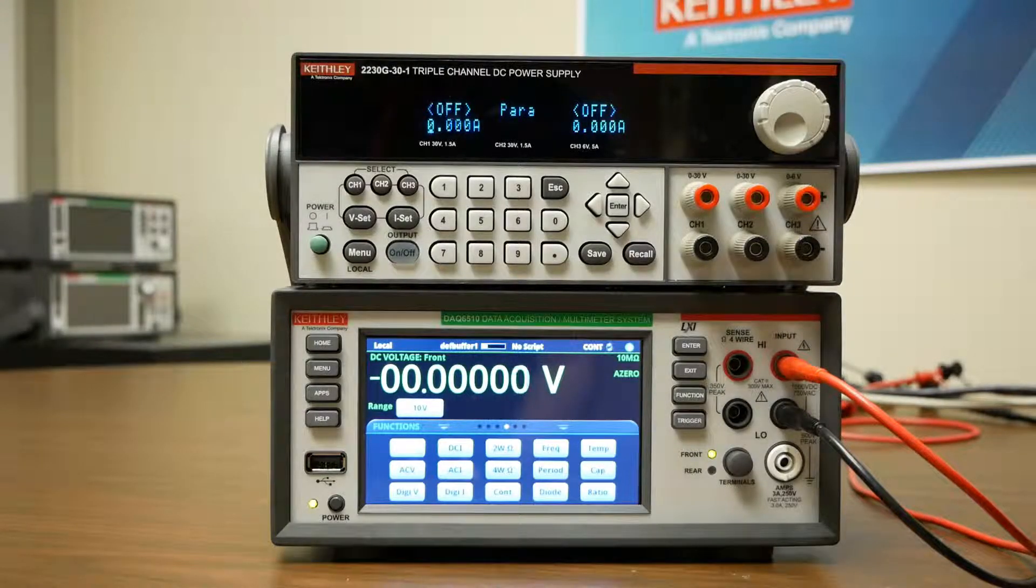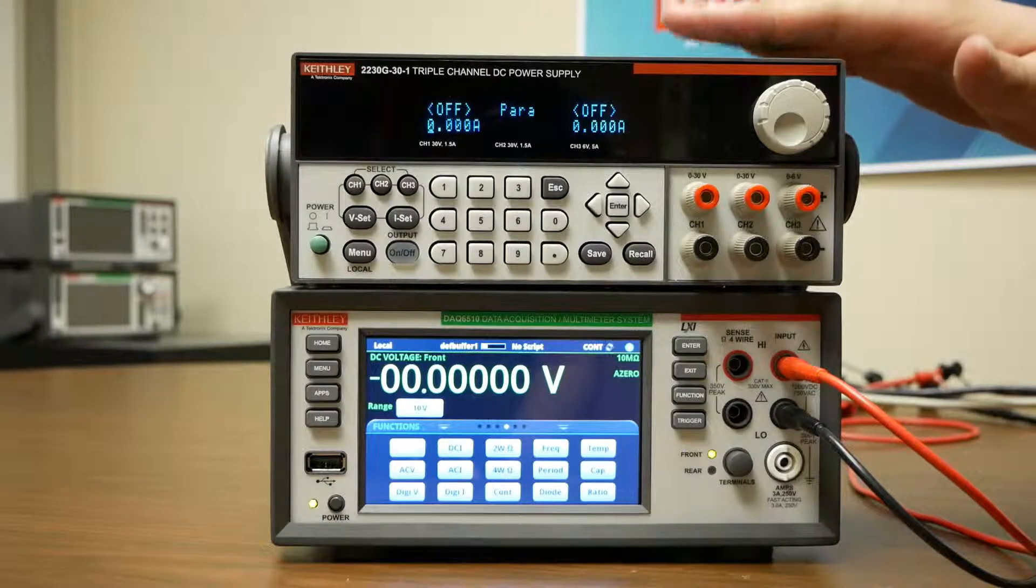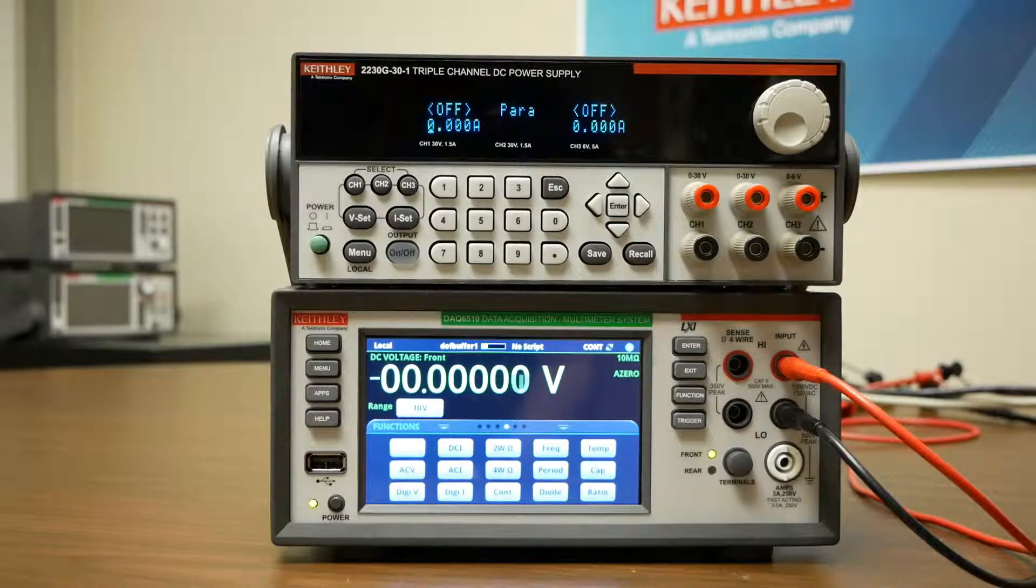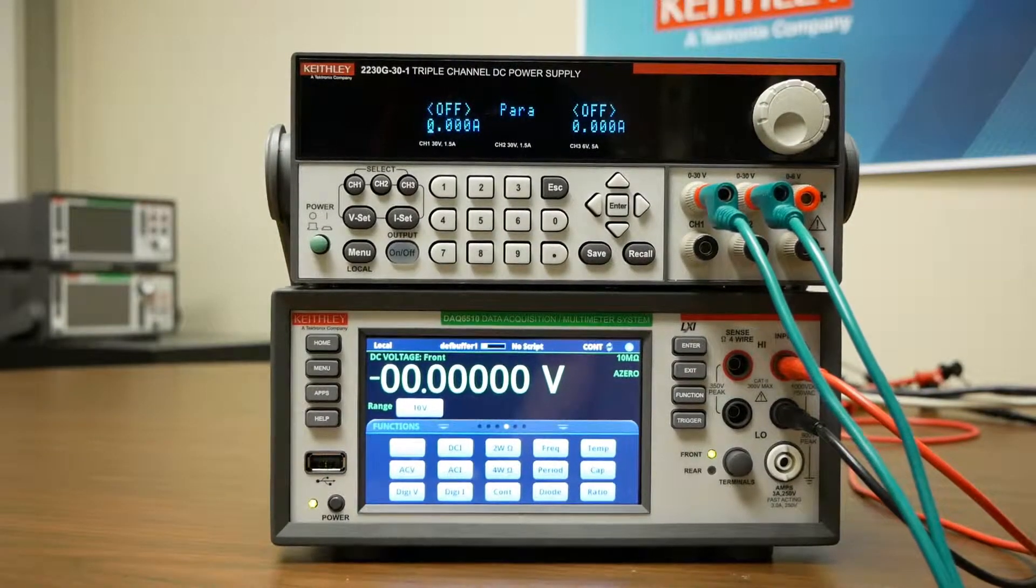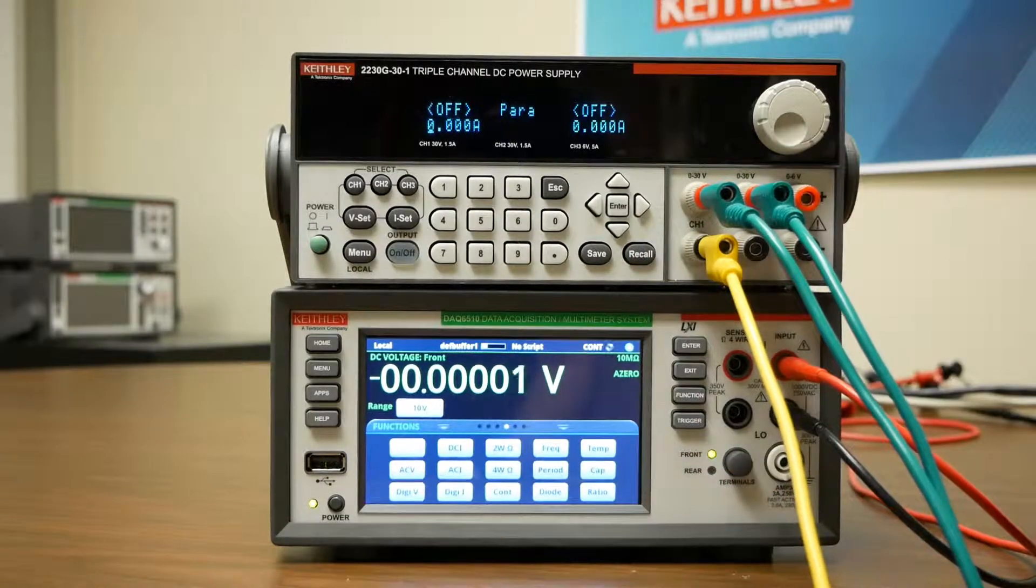Now we're going to make our front panel connections and we're going to configure our parallel test settings. First we'll connect our channel 1 and channel 2 high and our channel 1 and channel 2 low.